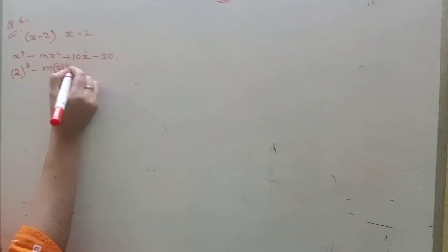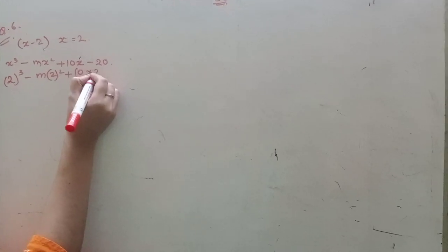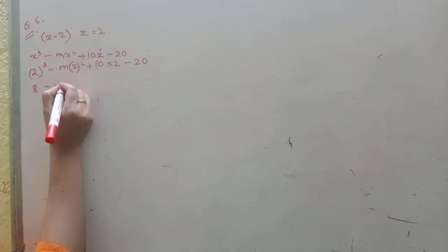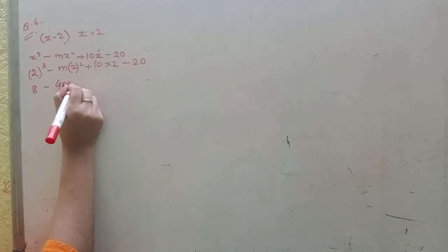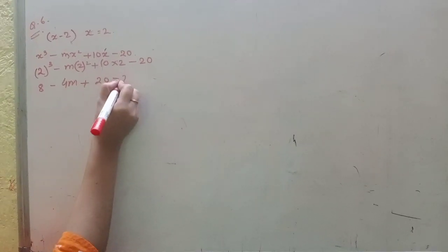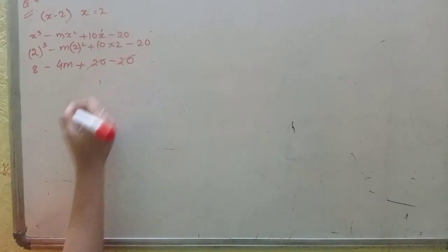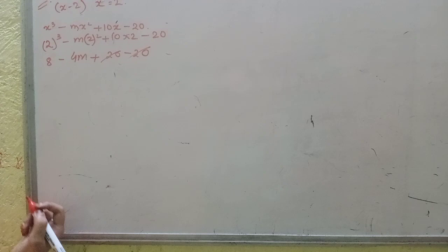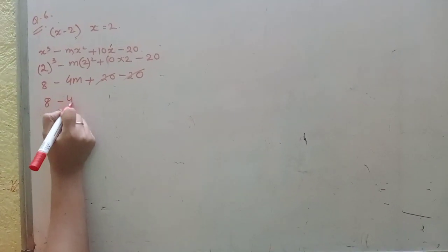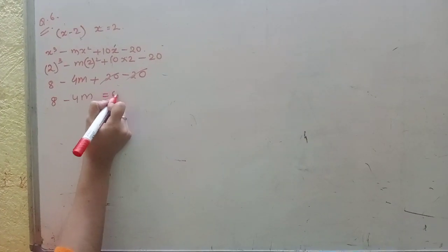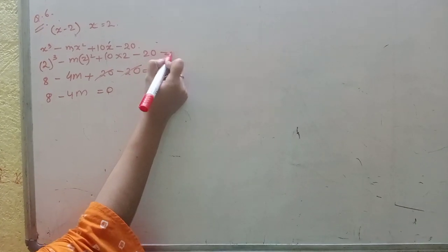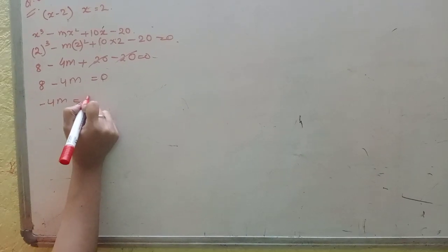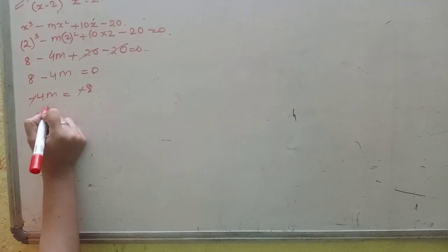We have to find m. x - 2 is a factor of x³ - mx² + 10x - 20. Substituting x = 2: 8 - 4m + 20 - 20 = 0. 8 - 4m = 0, so m = 2.